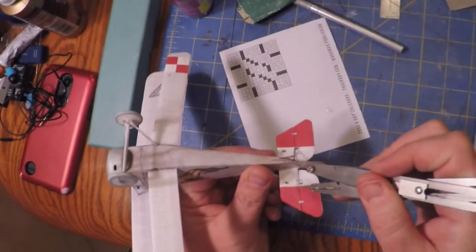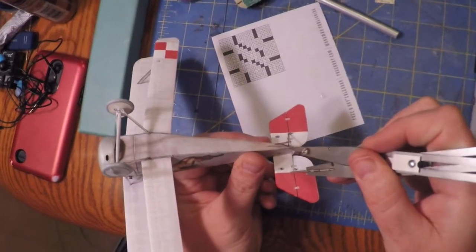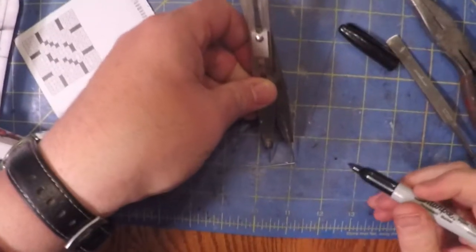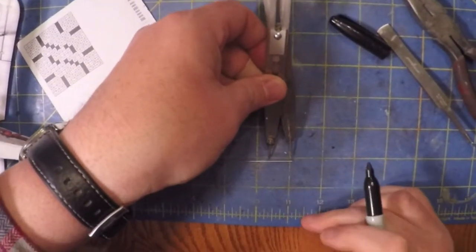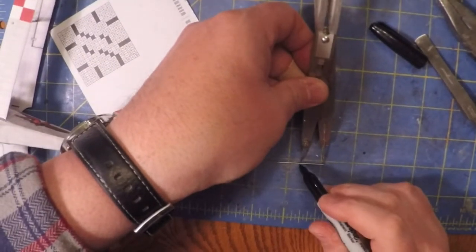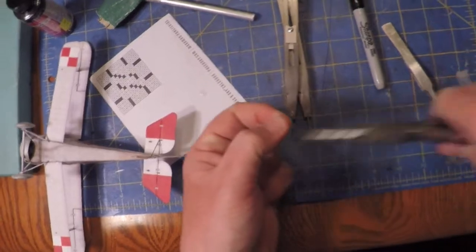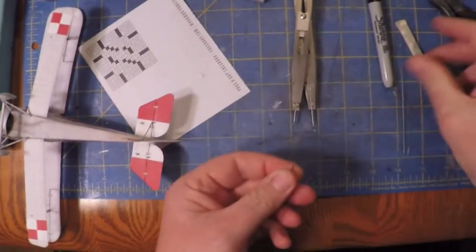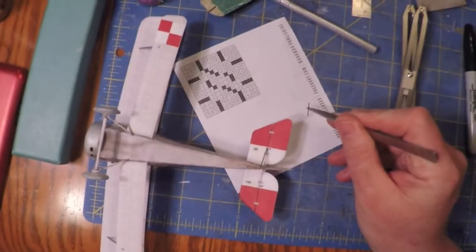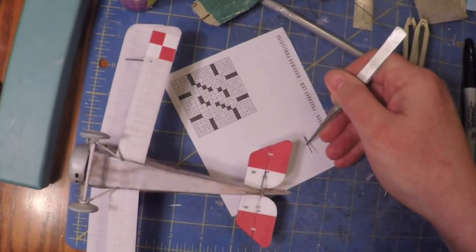First, take some dividers and measure where your support is supposed to go. I found some wire that looked about the right size, marked it with a little Sharpie, and then cut it off with some pliers.